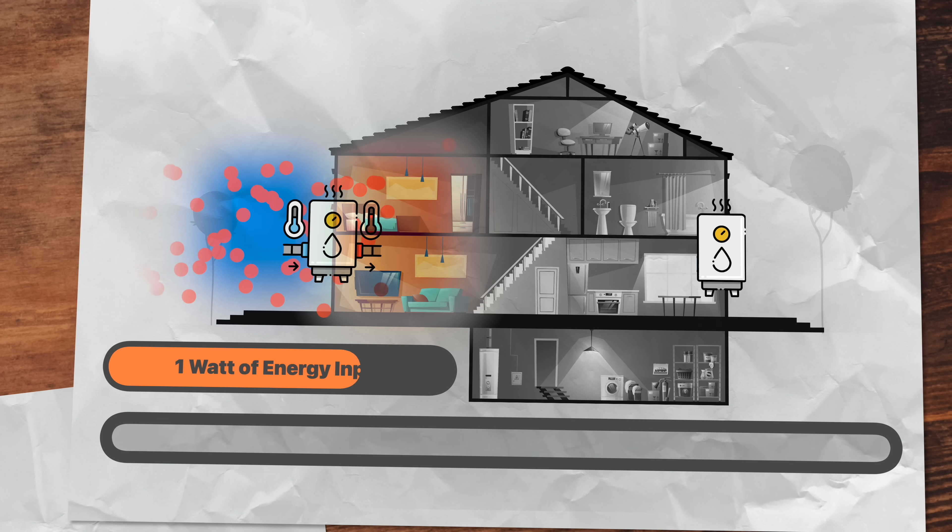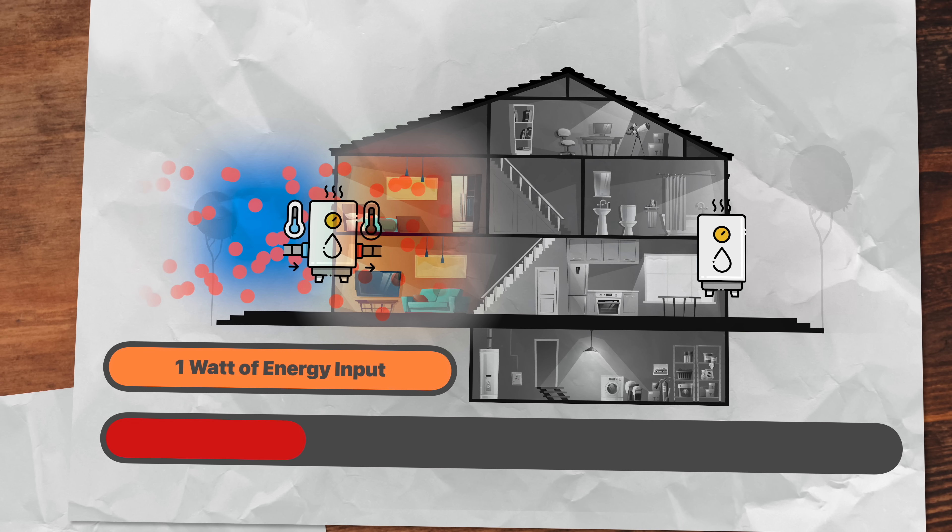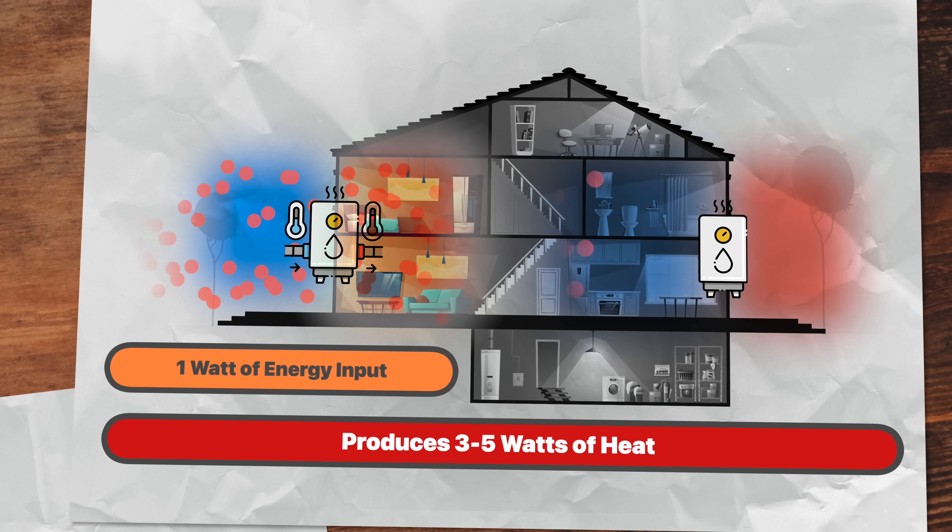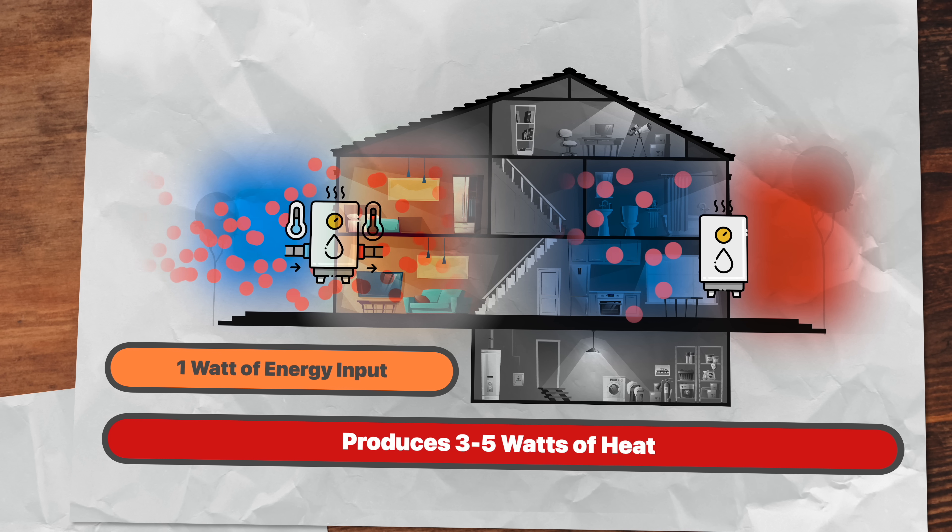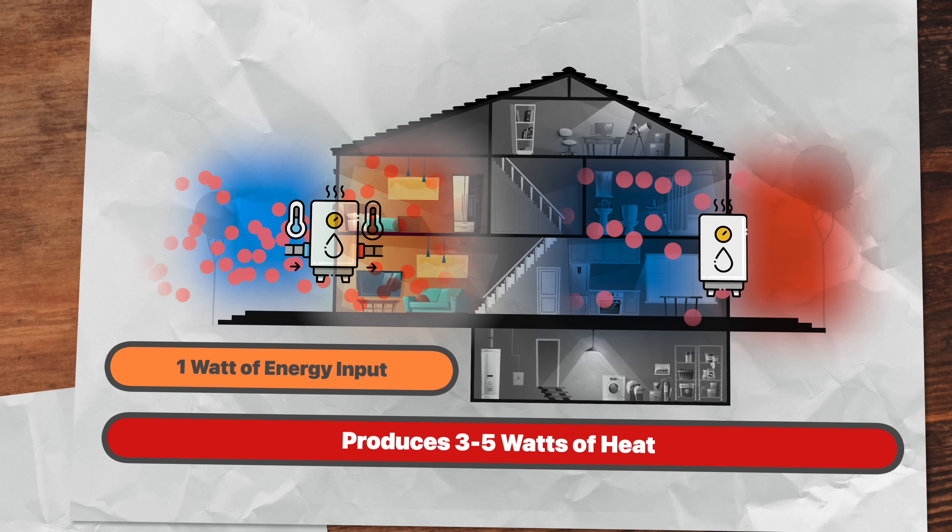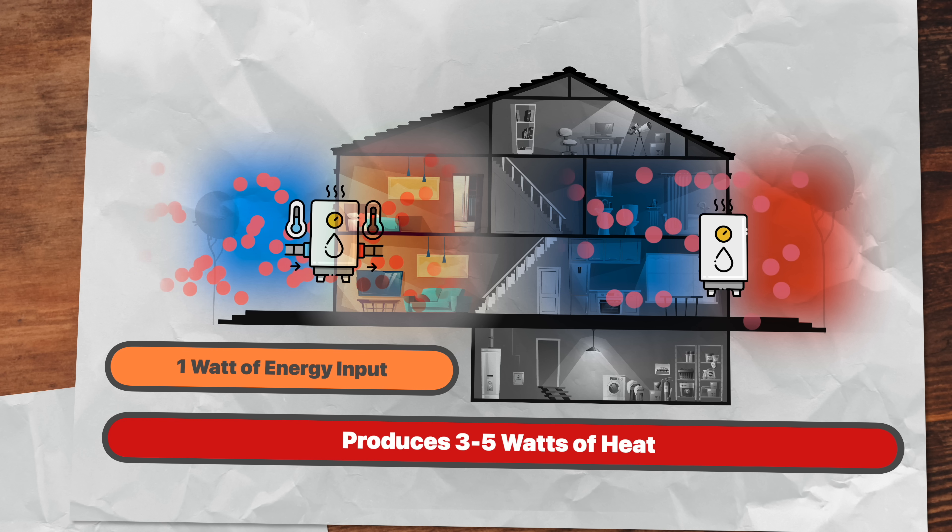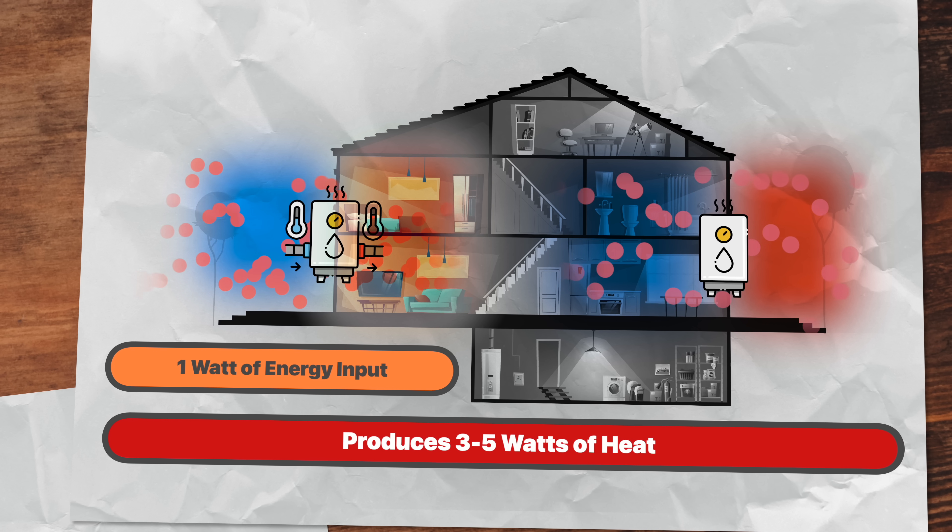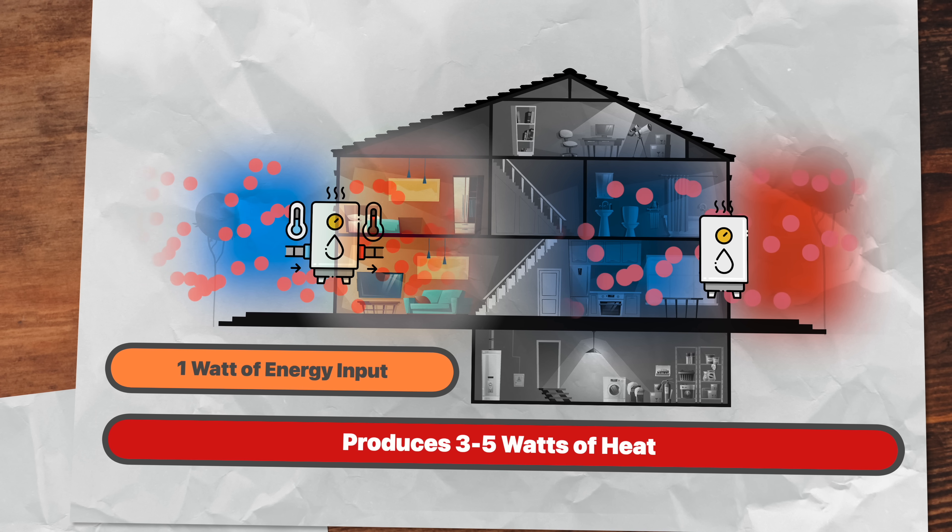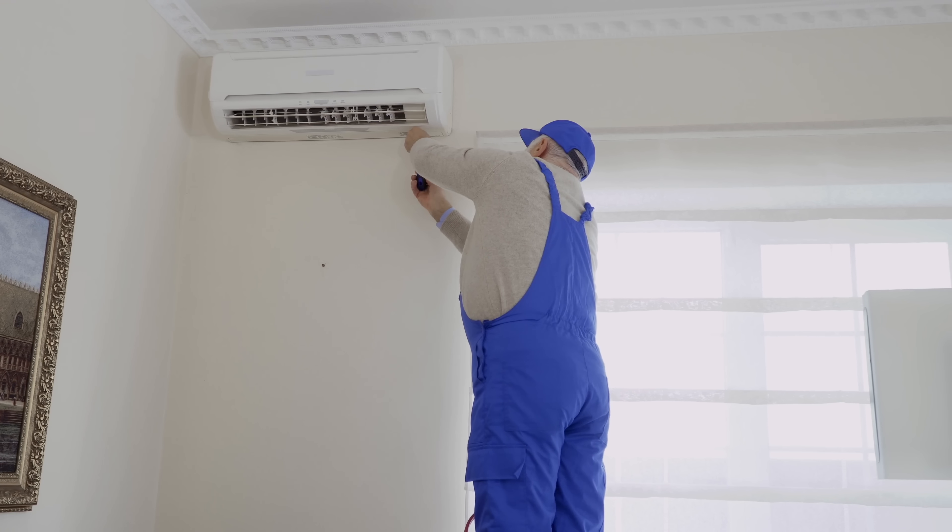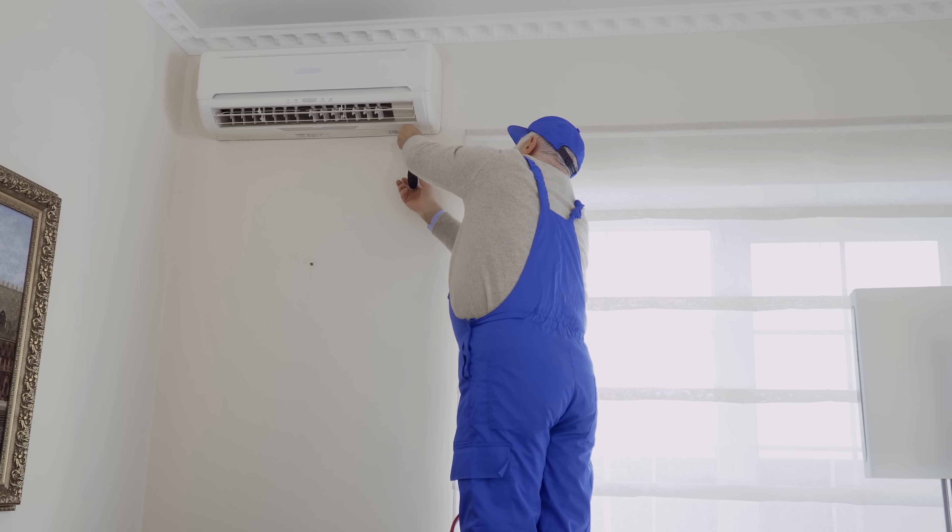Meaning one watt of energy used can produce between three or five watts of heat. This also allows them to cool spaces by pumping heat energy to the outside, leaving the conditioned space cooler, whether it's your living room or a refrigerator. And there's no other device that can really do this. For a more in-depth explanation of how they work, check out the link in the description for a video we did on heat pumps last year. But for all their greatness, they do have some problems.